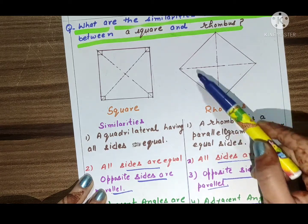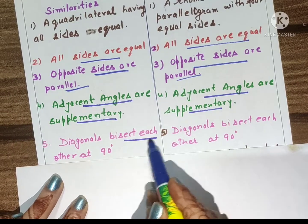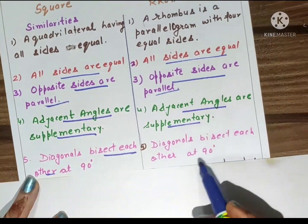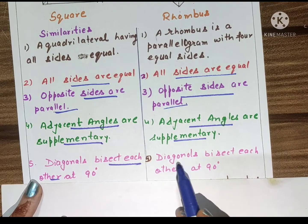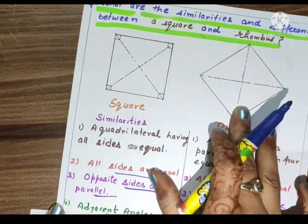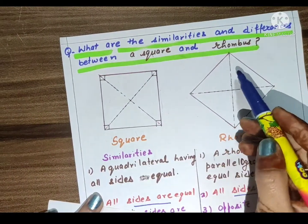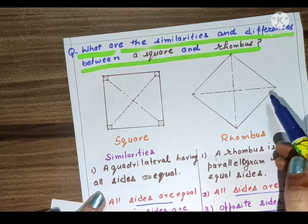Diagonals bisect each other at 90 degrees. These are the diagonals in square and these are the diagonals in rhombus.